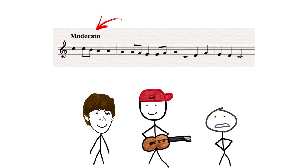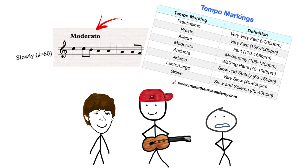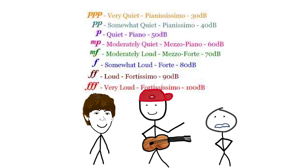And now, a lightning round of other symbols and terms. A tempo heading tells you how quickly to play — in Italian, though it's also sometimes in the composer's native language. Dynamic markings tell you how loud to play — also in Italian.